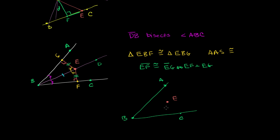What we want to do is prove that E must be on the angle bisector. So here, if you're on the angle bisector, you're equidistant. Over here, we're going to show: if you're equidistant, you're on the angle bisector. So if it's equidistant to BC and BA, then this perpendicular right over here is going to be congruent to this perpendicular right over there.